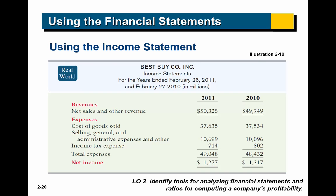Here's an income statement for Best Buy — it's a comparative income statement where two years are compared side by side. You'll see their revenues, expenses, and net income. This is reported in millions, which means you add six zeros to the end of each number.